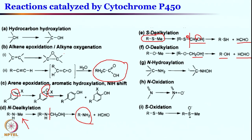Cytochrome P450 also enables N-hydroxylation and N-oxidation chemistry. If you have an imine or equivalent species, it can form an N-oxide. Sulfur oxidation is also possible — in addition to S-dealkylation, sulfur can be further oxidized to give sulfoxide species.